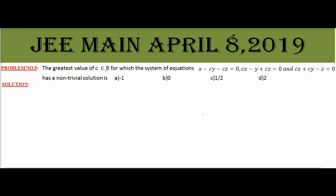The greatest value of C belongs to R for which the system of equations x minus cy minus cz, cx minus y plus cz, and cx plus cy minus z all equal to 0 has non-trivial solutions.